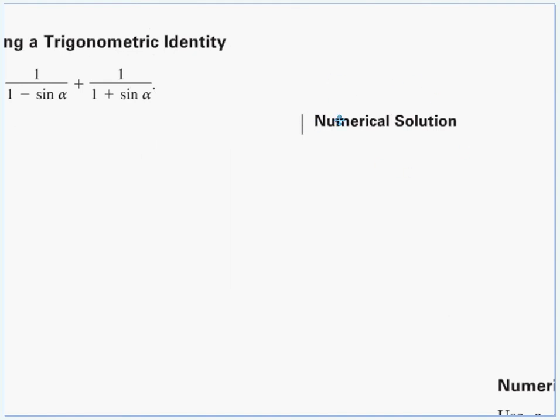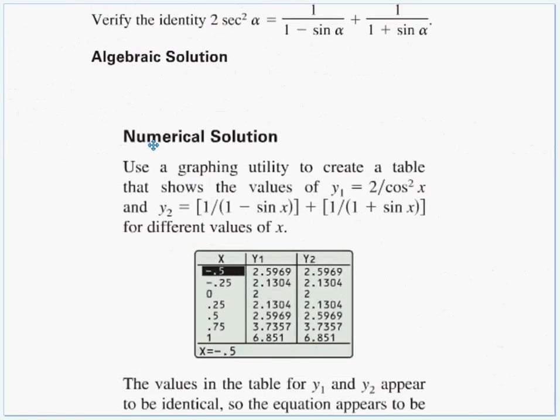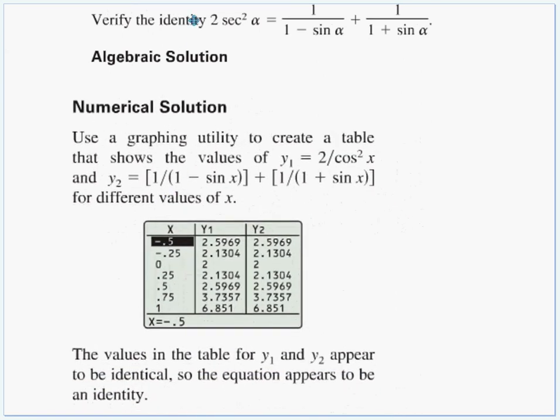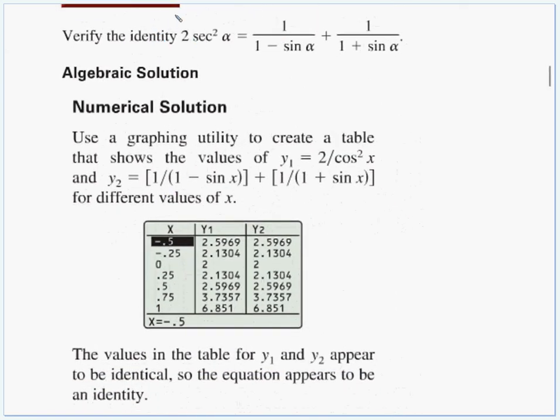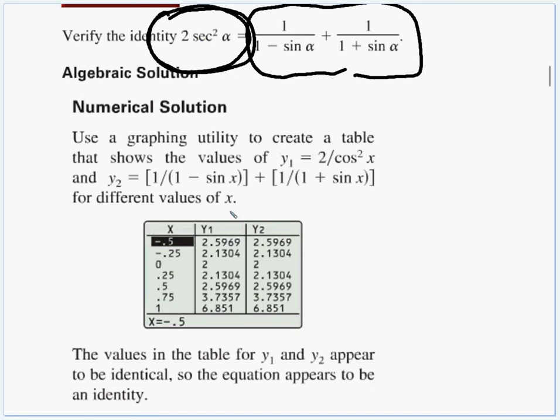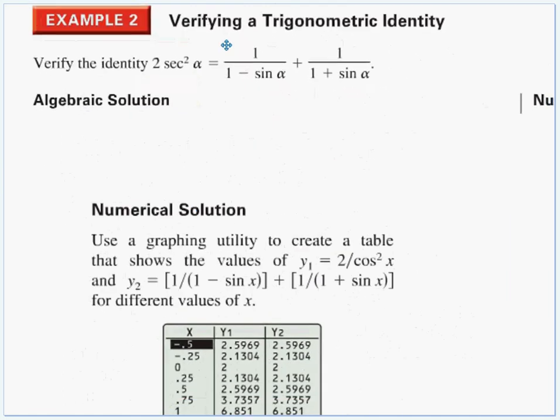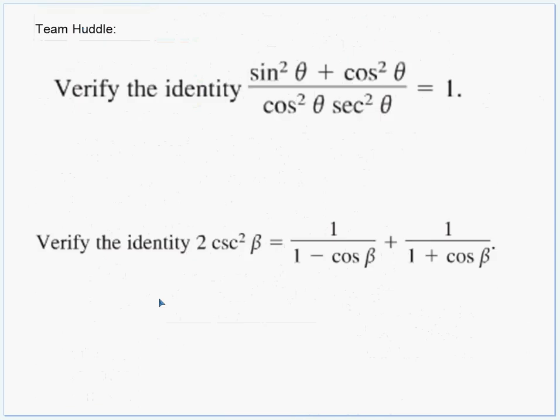Now, they have on here two numerical solutions. You know, what we did was algebraic. We could have done that numerically on a table and seen that these were equivalent. We'd open up our Y editor, and we could type in this for Y sub 1, 2 secant squared of alpha. And then for Y sub 2, we could type in this mess. So we would have those in the Y editor, and then we could look in the table of values right here. We plug in negative 0.5, the outputs are the same. Negative 0.25, outputs are the same. Zero. All the outputs are always the same because those functions are equivalent. They are exactly the same, but they just look a little different on the outside.